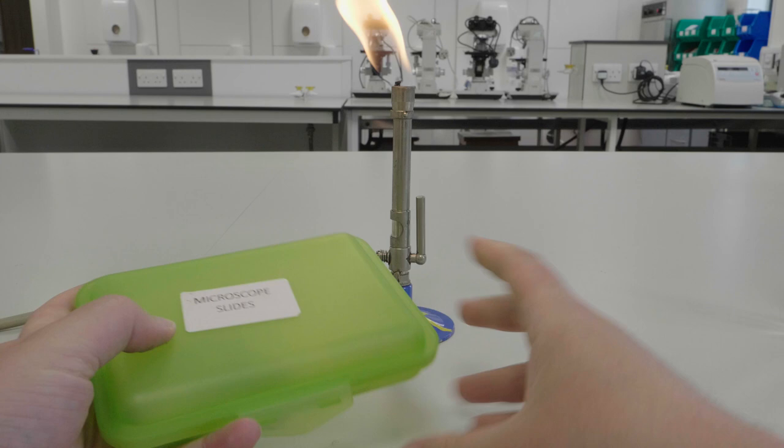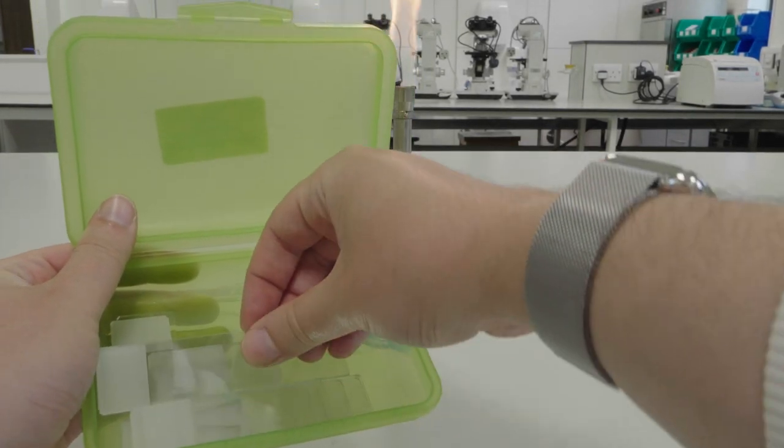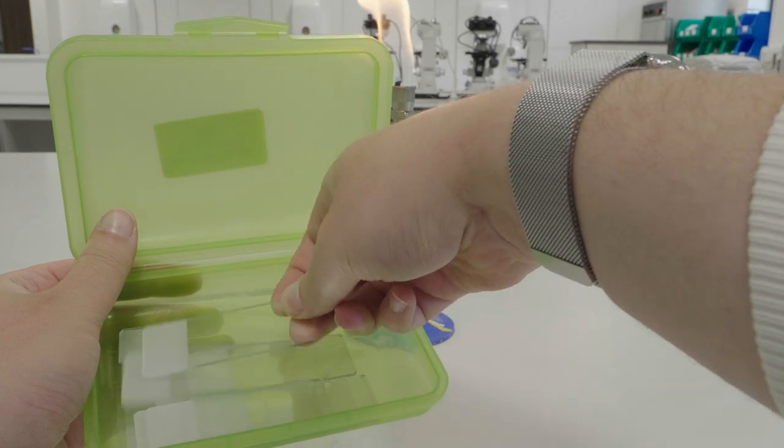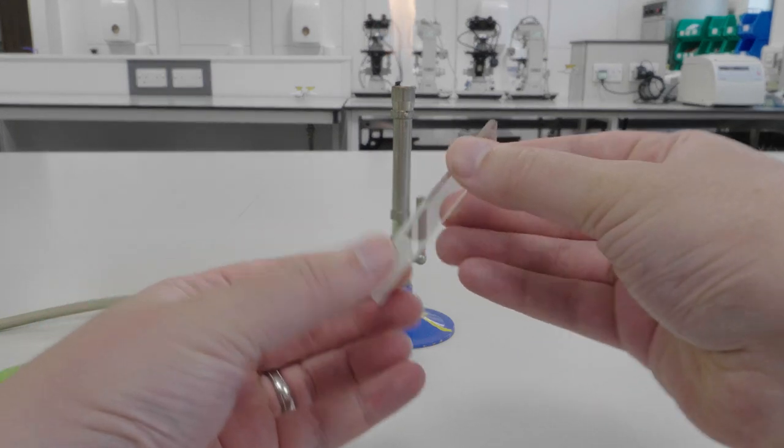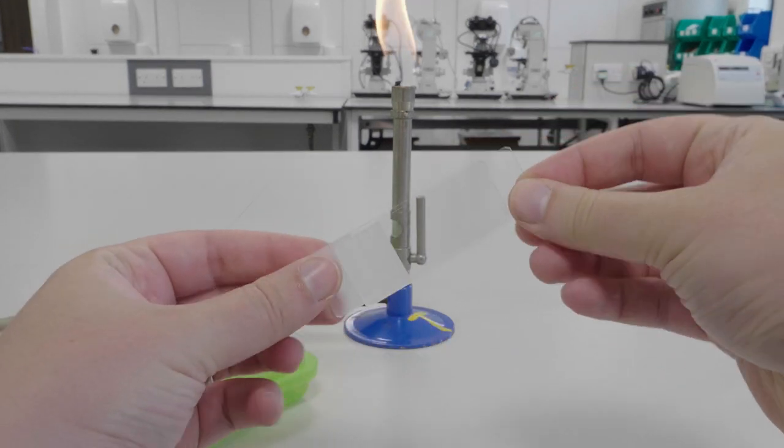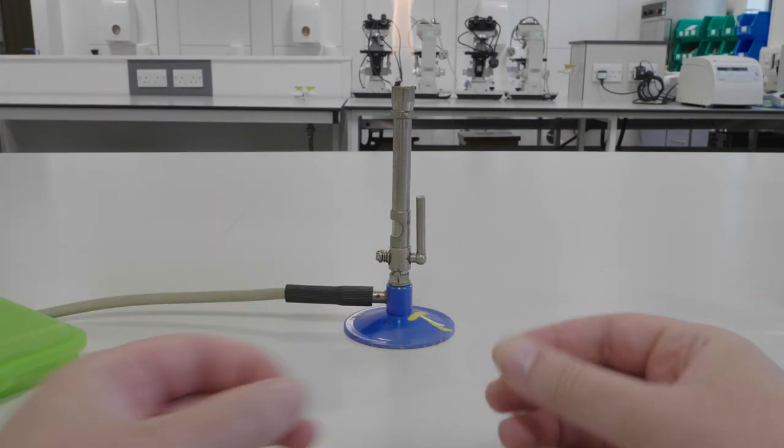Before we make a film we need to remove any grease from the microscope slide. Remove a slide from the box and make sure you have a single slide. You will note in the video that I had two slides stuck together, this is very common so please make sure you check you have just one.